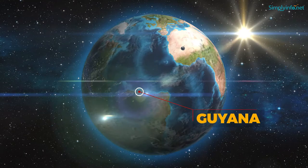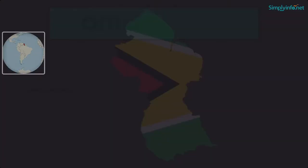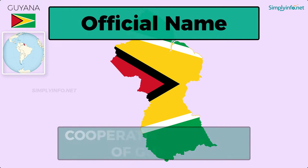Name: Guyana. Official name: Cooperative Republic of Guyana. Capital: Georgetown.